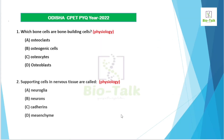Today's discussion covers the 2022 previous year questions. The first question is from physiology. The question asks: which bone cells are bone-building cells? Now, bone formation — the correct answer relates to bone cells. We have osteoclasts, osteogenic cells, osteocytes, and osteoblasts — which one is correct? There is some confusion here.